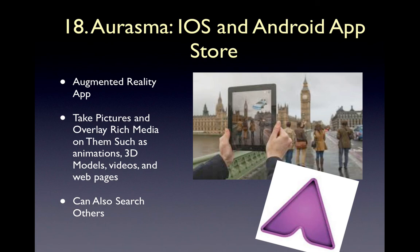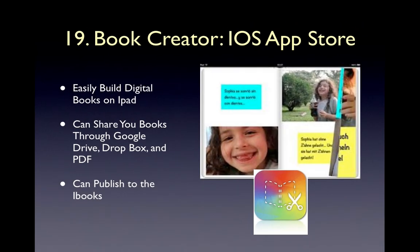Number eighteen is Aurasma. Aurasma is an iOS and Android app and it's an augmented reality app. What that means is you have a real-time picture — like a picture of Big Ben — and if you look on the iPad, you've got Big Ben in the real-time picture but also the DeLorean from Back to the Future overlaid on it. So it takes pictures and you can overlay rich media on them in real time, such as animations, 3D models, videos, and web pages. You can also search for others' augmented reality overlays on here. Number nineteen is Book Creator. Book Creator lets you easily build digital books on the iPad. Apple has their iBook creator for Mac, but if you don't have a Mac, this lets you do it straight from your iPad. You can share those books through Google Drive, Dropbox, and PDF, and you can also publish them to the iBook Store.